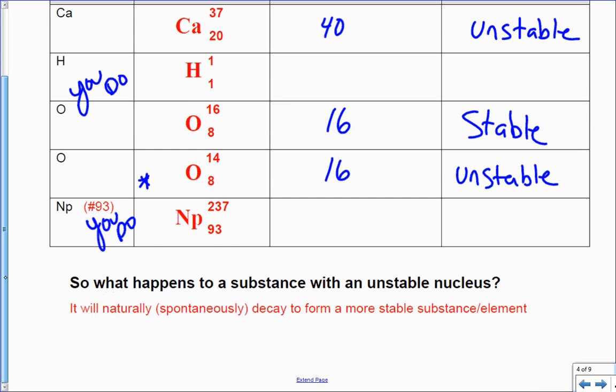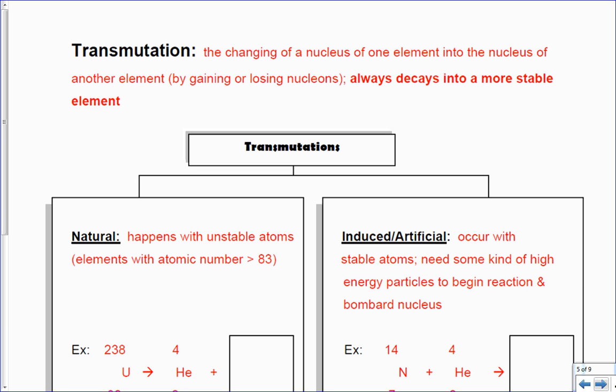So what happens to a substance with an unstable nucleus? It will naturally or spontaneously, remember without any added energy, decay to form a more stable substance or element. Remember everything in nature wants to be stable. Transmutation: the changing of a nucleus of one element into the nucleus of another element, like gaining or losing nucleons. Always decays into a more stable element - everything is going to become more stable, that's the idea.